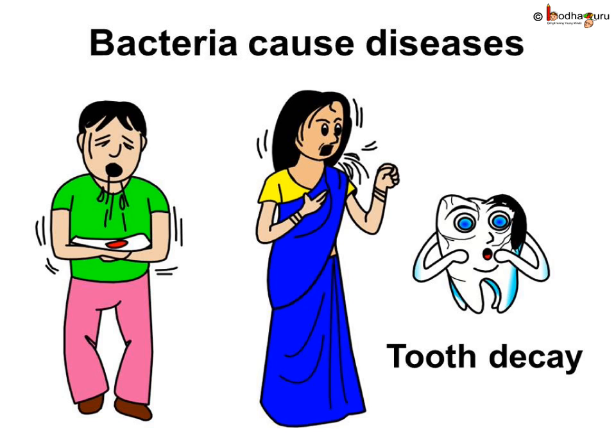Some bacteria cause diseases like TB, typhoid, and cholera. Some cause tooth decay. These bacteria are called pathogenic bacteria.